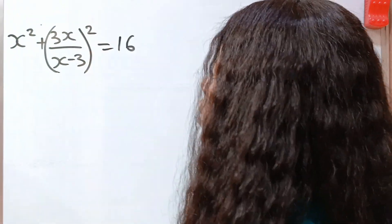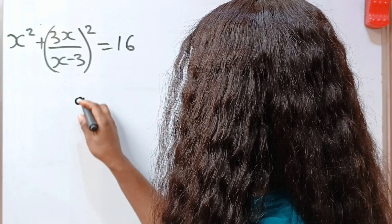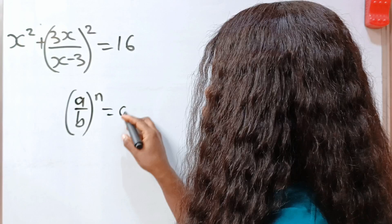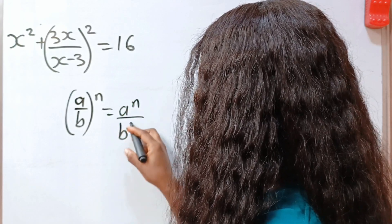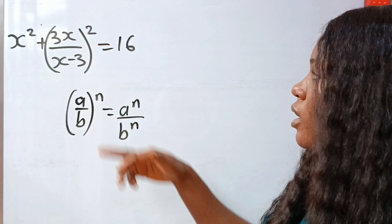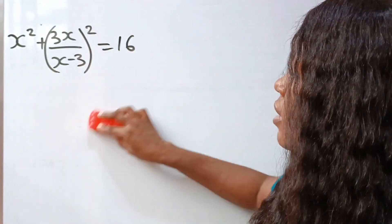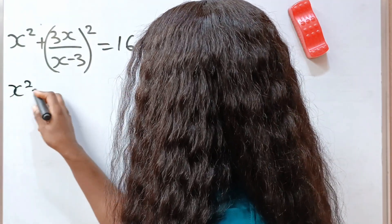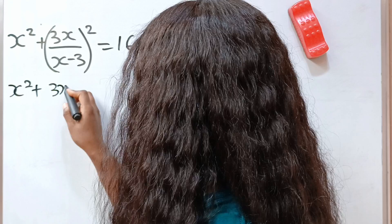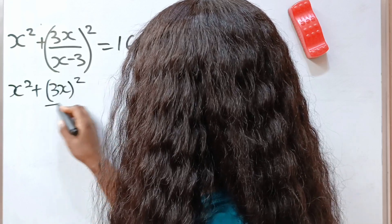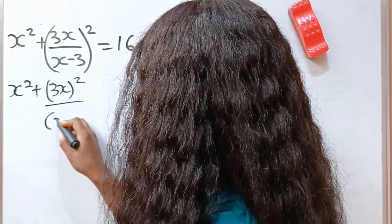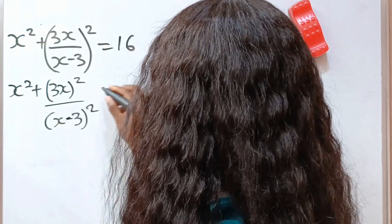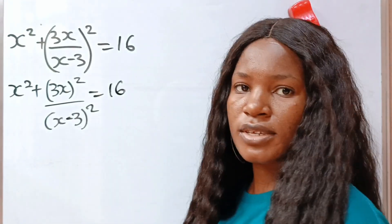First let's open this bracket. Because a divided by b raised to the power of n is equal to a to the power of n divided by b to the power of n — so they'll share the power. That means we can write this as x squared plus 3, all squared, divided by x minus 3 squared, and this is minus, equal to 16.